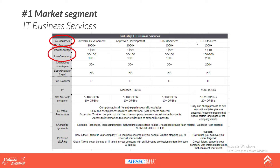Then look at both revenue range and company size — how many employees they have — which shows different scales per sector. When thinking about how to sell to a company, you then look at sub-products. For IT Business Services, all these sub-industries are looking for IT as the sub-product to sell them.